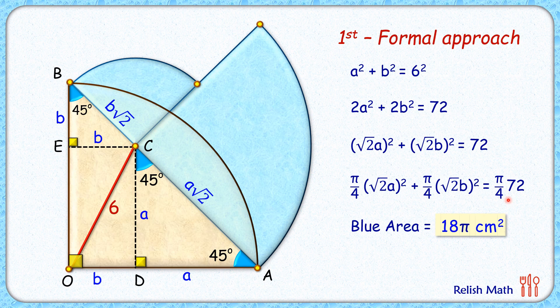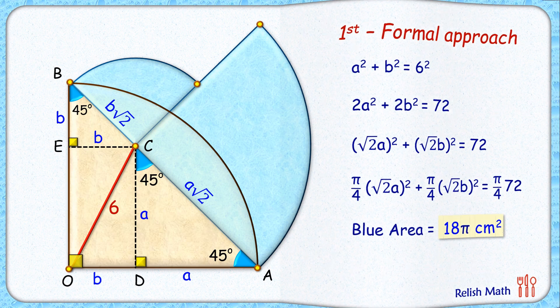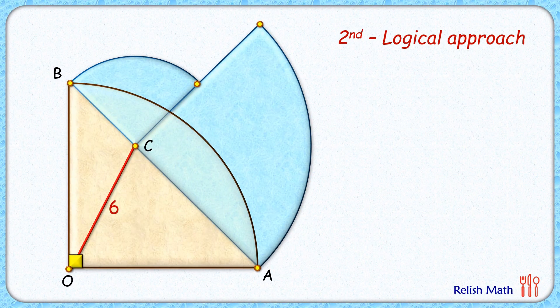Now let's solve the same question by the logical approach — without any paper or pen — in 30 seconds. For the logical approach, we'll use this limited data to our advantage. Only the OC length is deciding the area of these blue quadrants, so as long as OC remains at 6 centimeters, the total blue area will remain constant.